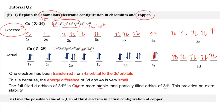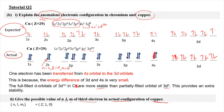For question number 2, we need to give the possible values of n, l, and m for the third electron in the actual configuration of copper. Looking at the actual configuration, the third electron — counting 1, 2, 3 — is in the 2s orbital. So n equals 2, l equals 0 because it is an s orbital, and since l is 0, m is also 0. Therefore n, l, m equal 2, 0, 0.